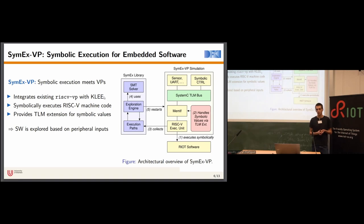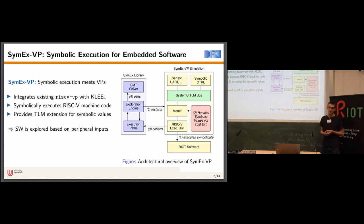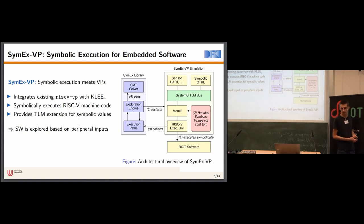For this reason, we propose SymEx-VP, which is essentially a combination of symbolic execution and virtual prototypes. It integrates the existing open-source RISC-VP with the KLEE symbolic execution engine. However, contrary to KLEE, SymEx-VP does not execute LLVM IR — since this would not allow us to handle inline assembly. Instead, it executes RISC-V machine code directly based on symbolic values, such as symbolic register or memory values.